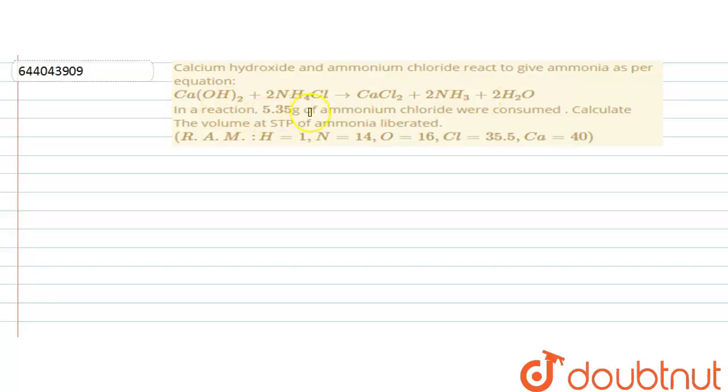In a reaction, 5.35 gram of ammonium chloride were consumed. Calculate the volume at STP of ammonia liberated. The relative atomic masses given are: H equals 1, N equals 14, O equals 16, Cl equals 35.5, and Ca equals 40. Now let us first find the molecular mass of NH4Cl.